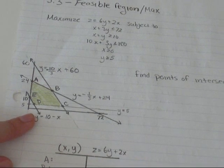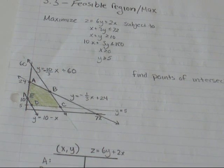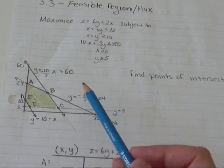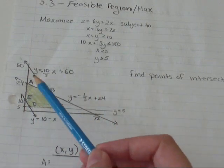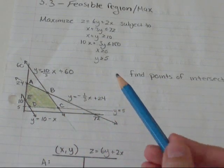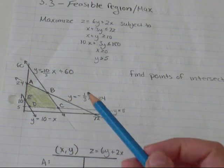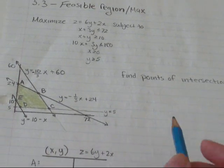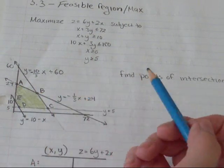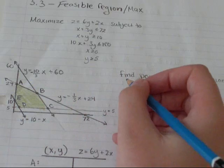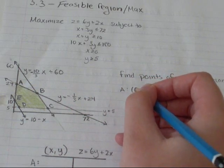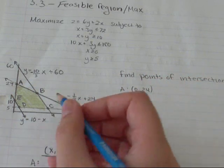So here I've drawn the graph again. And now I'm going to show you how to solve the rest of this problem. The first thing I'm going to do is I've labeled the points of intersection as A, B, C, D, E. So now I need to find the x, y point where these are actually existing because it is a place. So for A, it looks like that's 0 and 24.